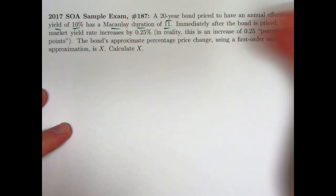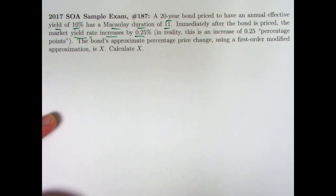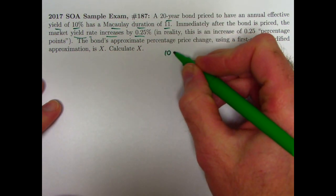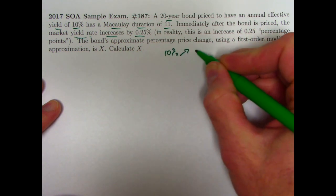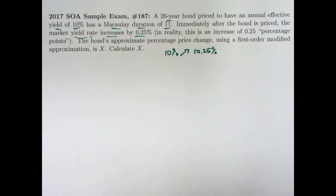Throw a little bit of a curveball in the next sentence here. Immediately after the bond is priced, something happens. The market yield rate changes. It increases by 0.25%. Now, when I read that, I thought probably what they meant was that it would go from 10% up to 10.25%. And that is indeed the understanding of what's going on here based on the possible answers, and based on, in fact, the actual answer in the answer key.